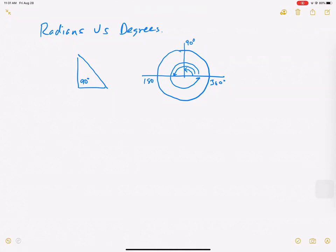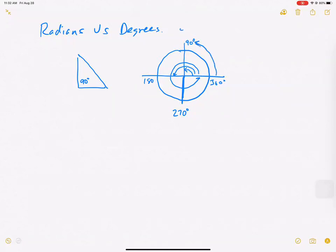To get away from that Earth-centric number, they came up with radians. But first, let's look at some other special degree angles. We have 90, 180, 270, and back to 360. You can think of these as multiples of 9: 9×2=180, 9×3=270, 9×4=360. If you keep going, 9×5=450, 9×6=540, and 9×8=720, which is two full circles.